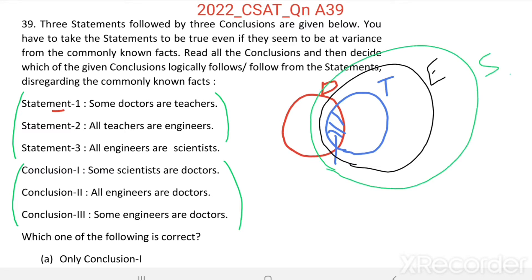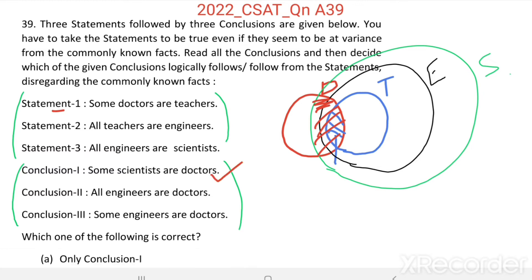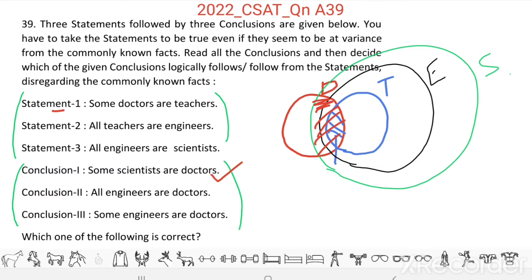Now see Conclusion 1: some scientists are doctors. Since some doctors are teachers and all teachers are engineers and all engineers are scientists, there is a common area — some scientists are doctors. Conclusion 1 is correct. Conclusion 2: all engineers are doctors. From the figure, all engineers are not doctors, so this is only a possibility and is not correct.